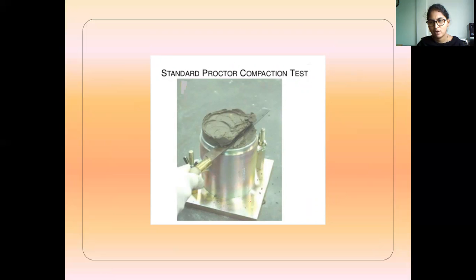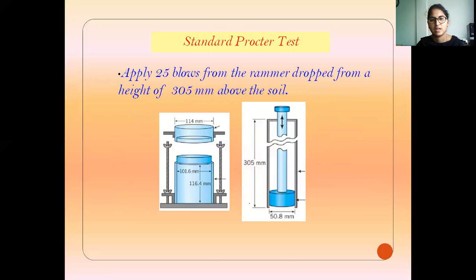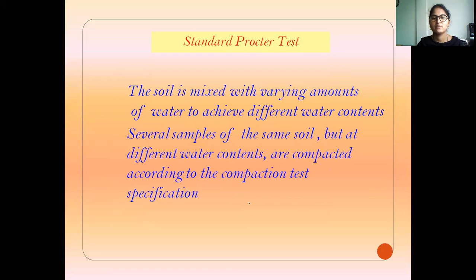After compaction, the collar is removed from the mold, and the top of the surface is leveled. That is leveled and then weighed using a weighing machine. The Proctor compaction test is a function of dry density, water content, and compaction effort. Soils are of different types — we can consider gradation and presence of clay minerals, etc.